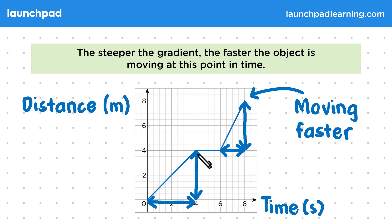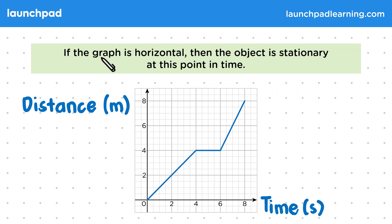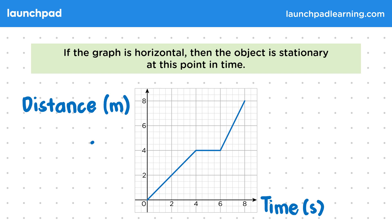But what about the horizontal section in the middle — what does this mean? If the graph is horizontal, then the object is stationary at that point in time. If a graph is horizontal, that means when the x value changes, the y value won't change at all. In other words, as time passes, the distance the object has travelled isn't changing, so the object is not moving.